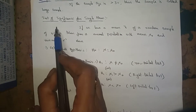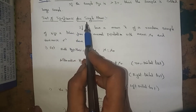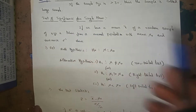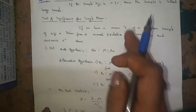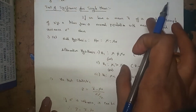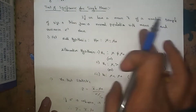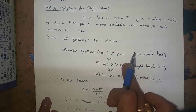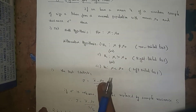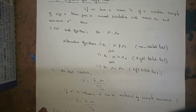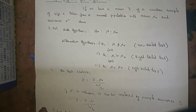Now, for the test of significance for single mean, I will first explain the formula — what is a null hypothesis, what is an alternative hypothesis, what is the test statistic, and what are the steps involved. Then I will explain a problem.